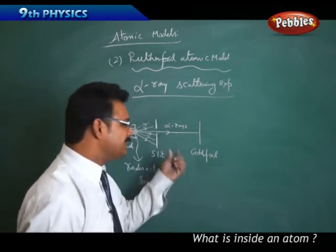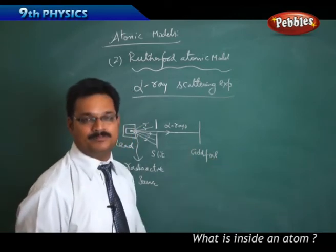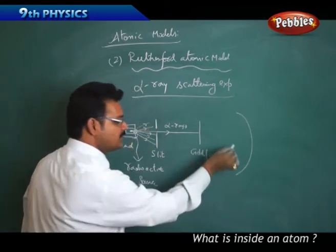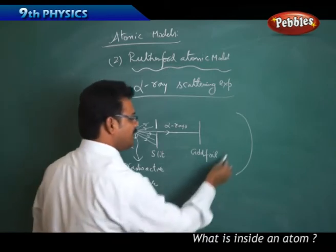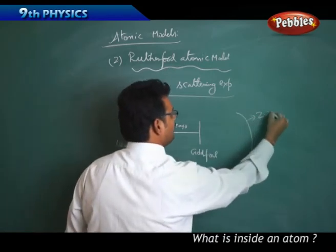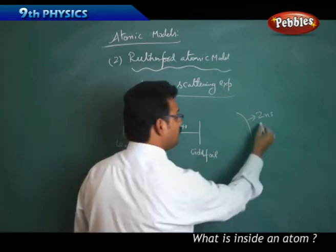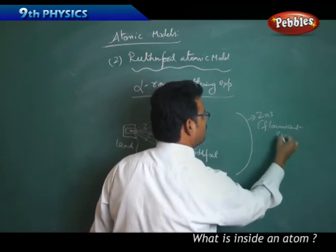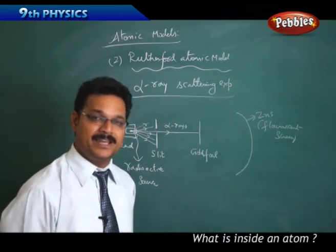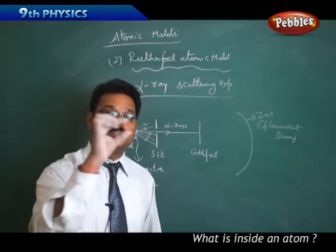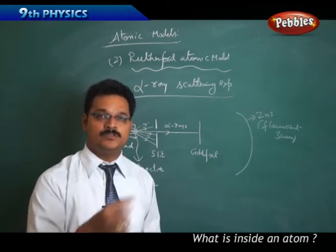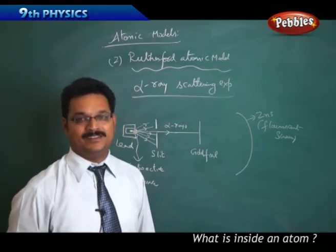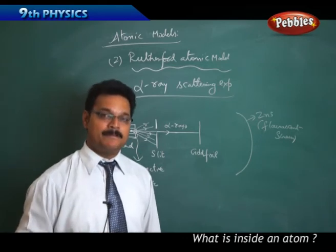The gold foil is a very very thin sheet of gold. After hitting the gold foil, there is a screen in this curved shape. This screen is coated with zinc sulfide, which is called a fluorescent screen. Fluorescent screen, you know what it is? It is nothing but the tube light.